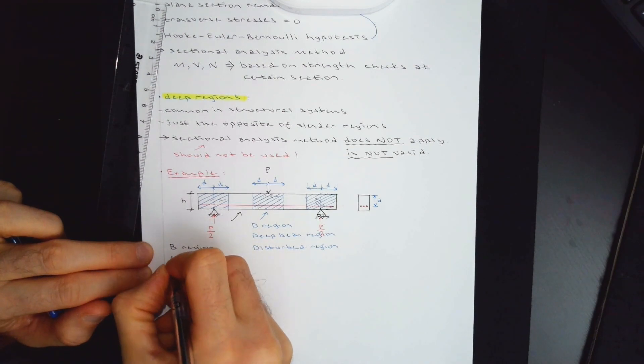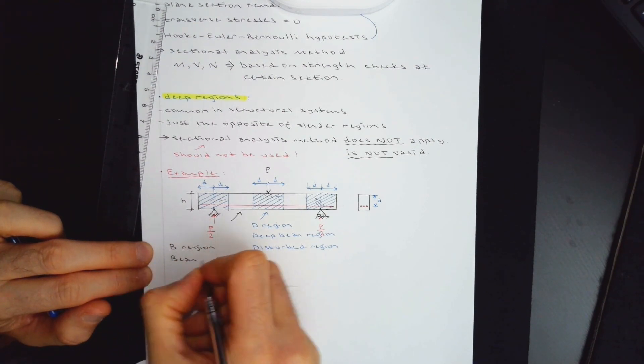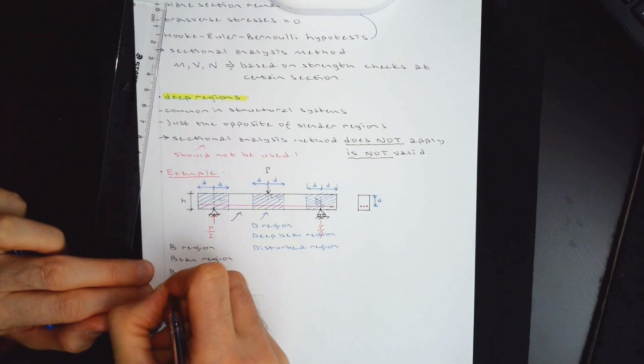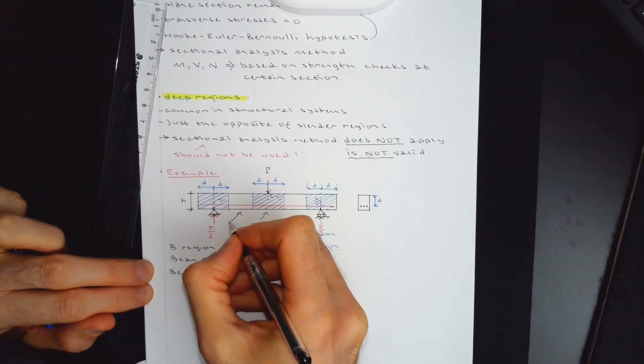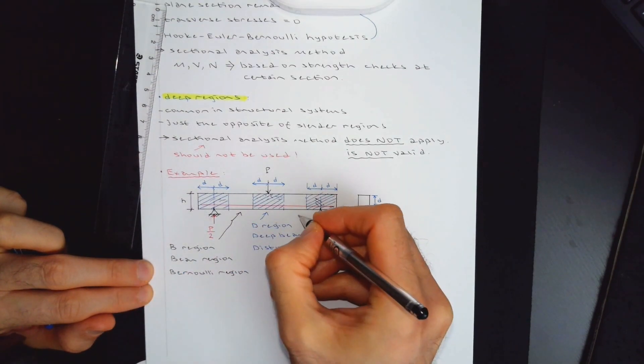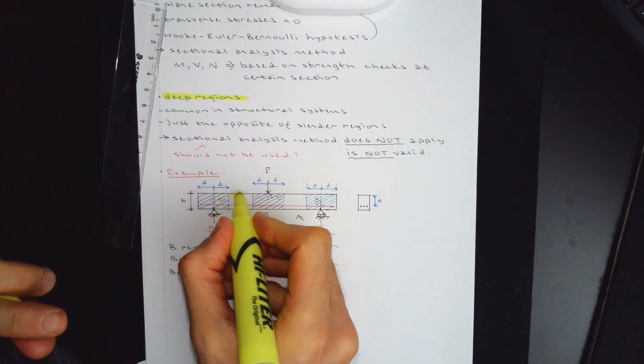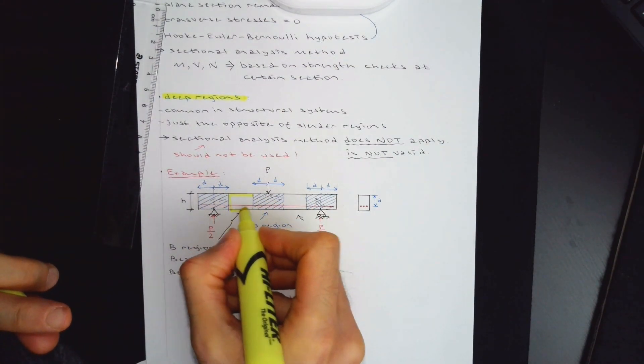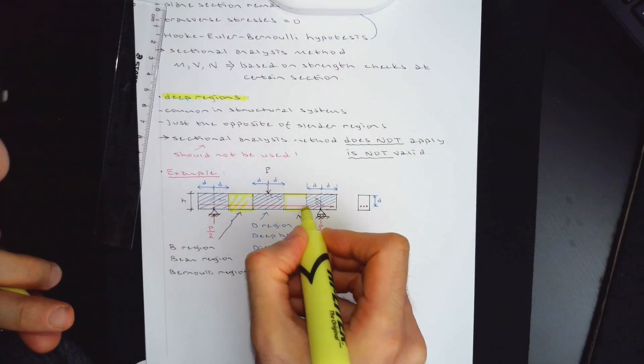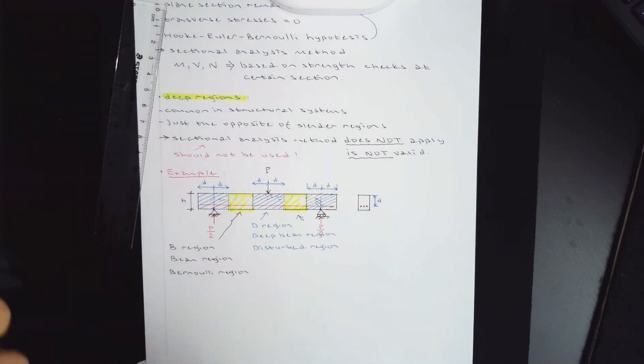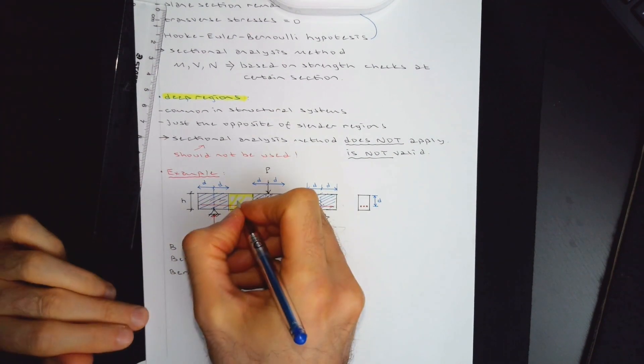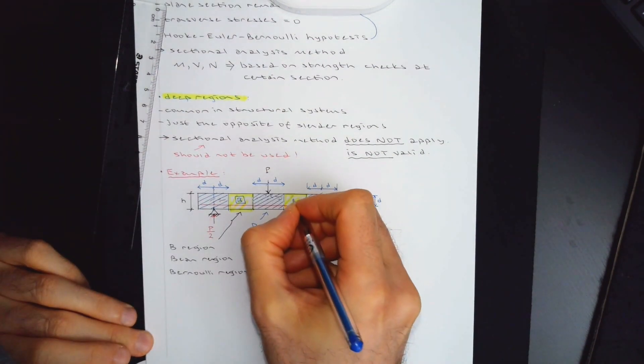So what you end up with in between would be b region. That's the region you can analyze using your sectional method. This is b region also called as beam region. Call this also Bernoulli region. So this is that region. This is that region. In other words, this is the region you can apply your sectional method. This is the only region you can analyze using your daily methods.